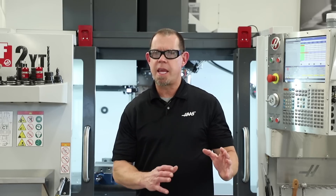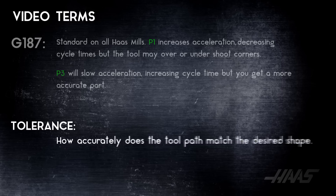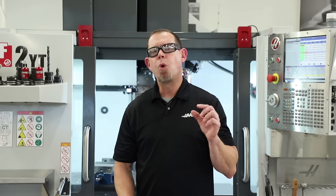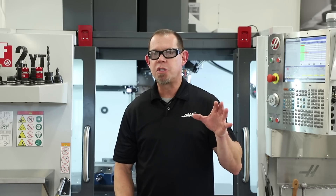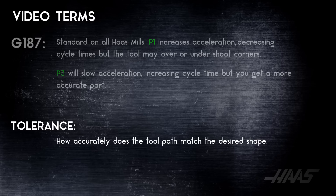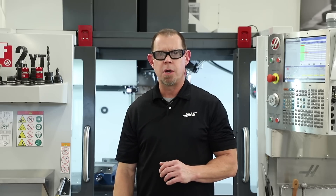Tolerance refers to settings within the CAM system that determine how accurately the program toolpath matches your desired shape. A tighter tolerance, or smaller number, means more line segments. You might assume that this will make for a more accurate part, and it might, but there's a big trade-off. Too many line segments and your program may have so many lines of code that the machine can't process them all efficiently. This can result in not only a slower cycle time, but in some cases your machine will slow down or stop as it tries to process thousands of lines of code.